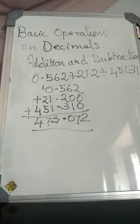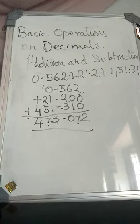Here with three numbers, one was already having three decimal places, and we converted the other two also into decimals with three decimal places. So that is about addition. Now let us do assignment one, which is based on addition of decimal numbers.